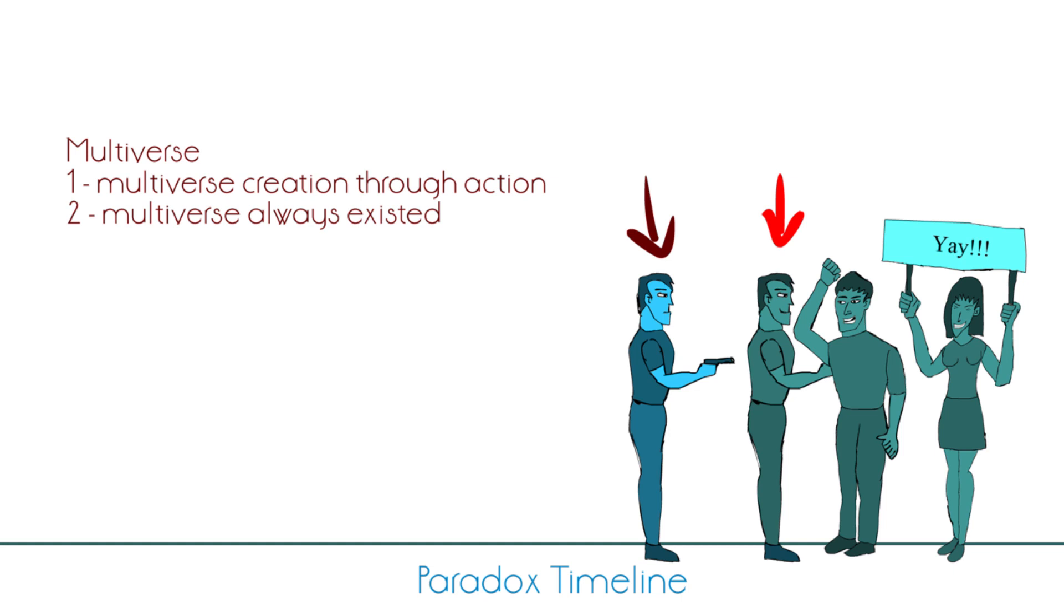Multiverse travel has two theories: either the alternate reality gets created as a result of his actions, or it already exists and the hero lands in the wrong world. By this logic, his original universe continues to exist where nothing has changed, and the dictator is still ruling that world.